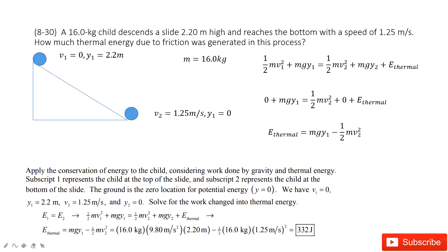Chapter 8 is about conservation of energy. You can see on this slope we have a child. Initially, the velocity is 0, and the position is 2.2 meters.